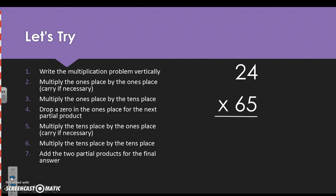Let's start with the first problem. We need to write the multiplication problem vertically, which is already done for us. You are to multiply the ones place times the ones place. So 4 times 5 is 20, carry the 2, drop the 0. 5 times 2 is 10, plus 2 is 12.